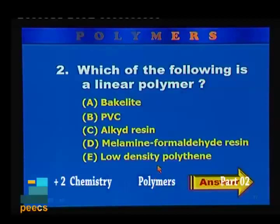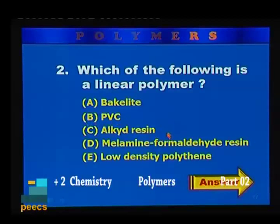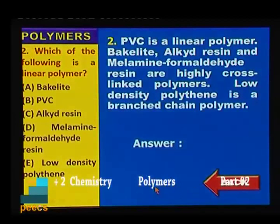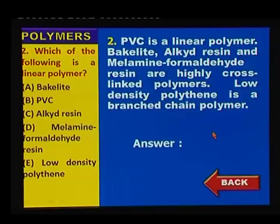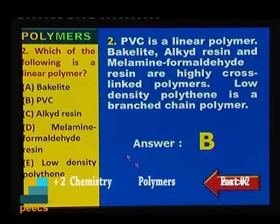Sample question 2: Which of the following is a linear polymer? Options: bakelite, PVC, alkyd resin, melamine formaldehyde resin, low density polythene. PVC is a linear polymer. Bakelite, alkyd resin, and melamine formaldehyde resins are highly cross-linked polymers. LDP is a branched chain polymer. The correct answer is option B — PVC (polyvinyl chloride).